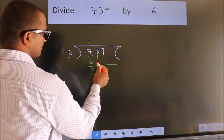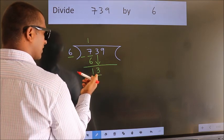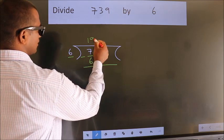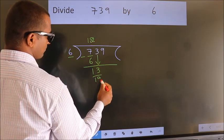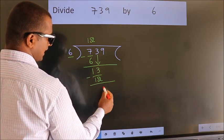After this, bring down the beside number. 3 down, so 13. A number close to 13 in the 6 table is 6 twos, which is 12. Now we subtract and get 1.